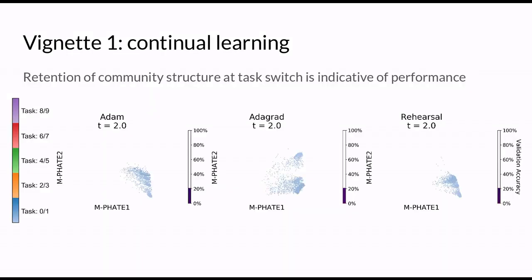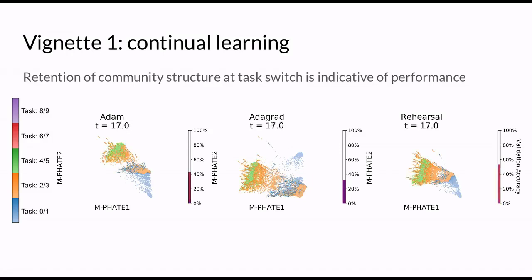When we visualize these networks with mFATE, we see that Adam, which performs worst, experiences a structural collapse after each task switch, while naive rehearsal, which performs best, appears to continuously build on the structure learned in the early tasks.